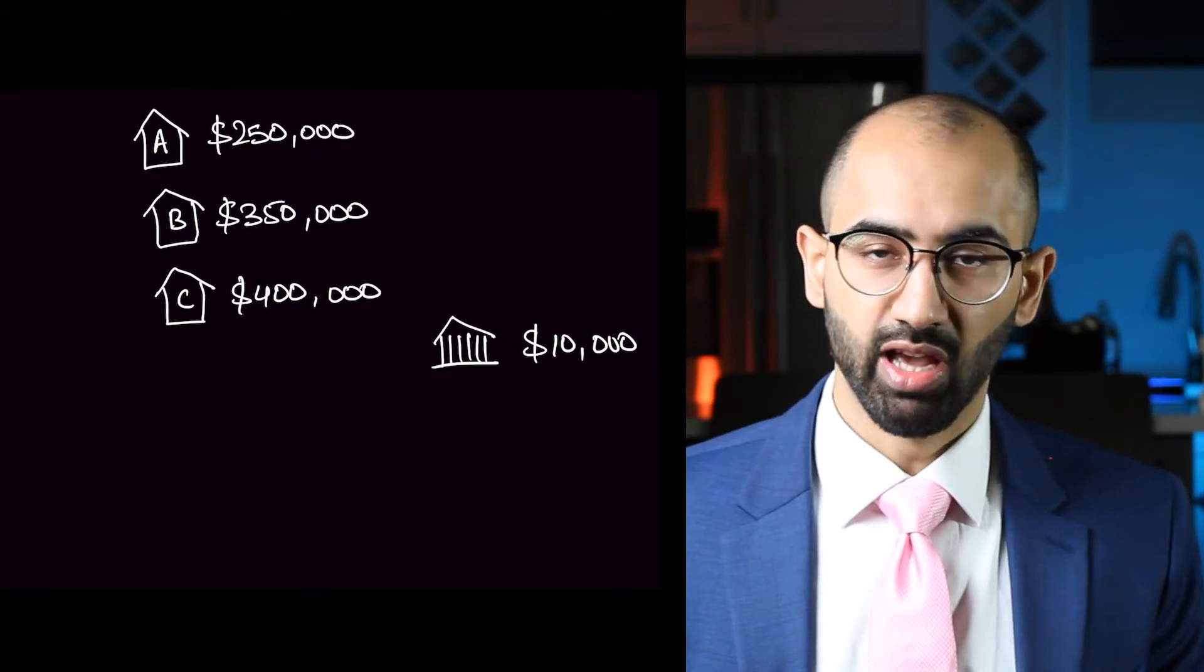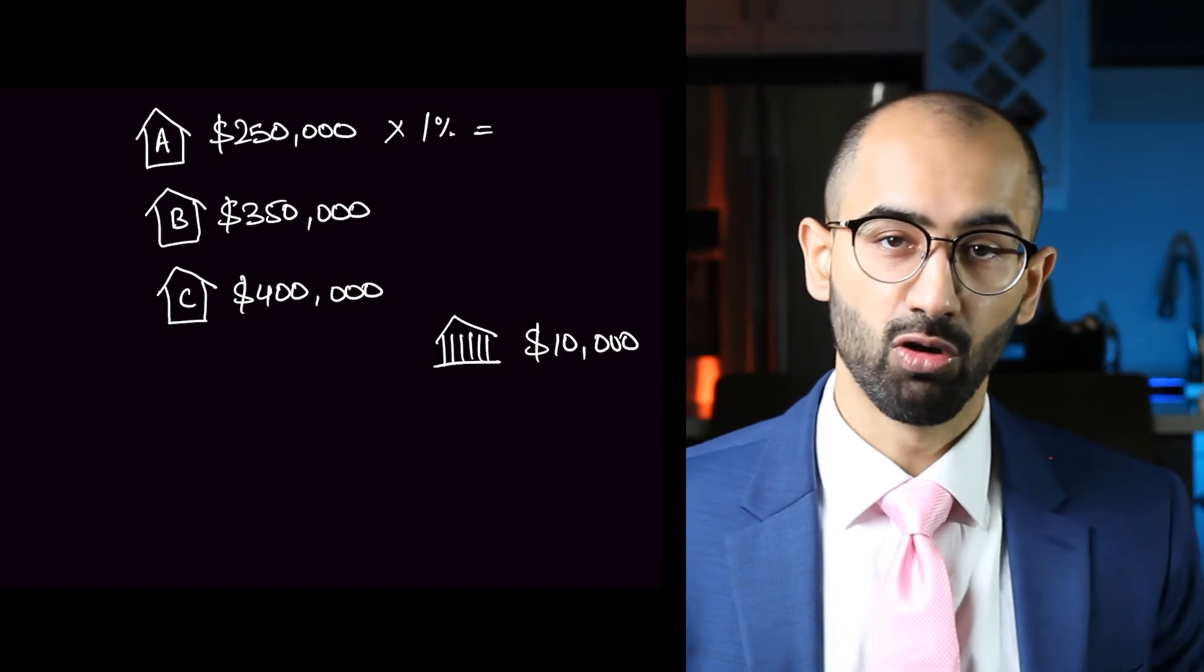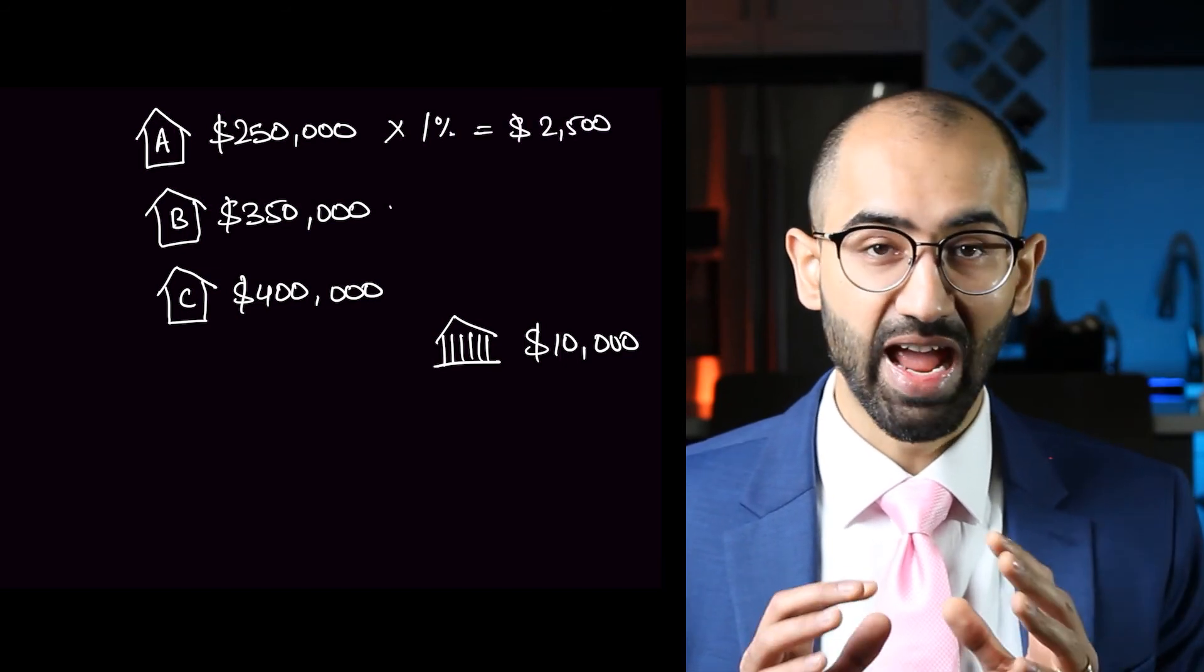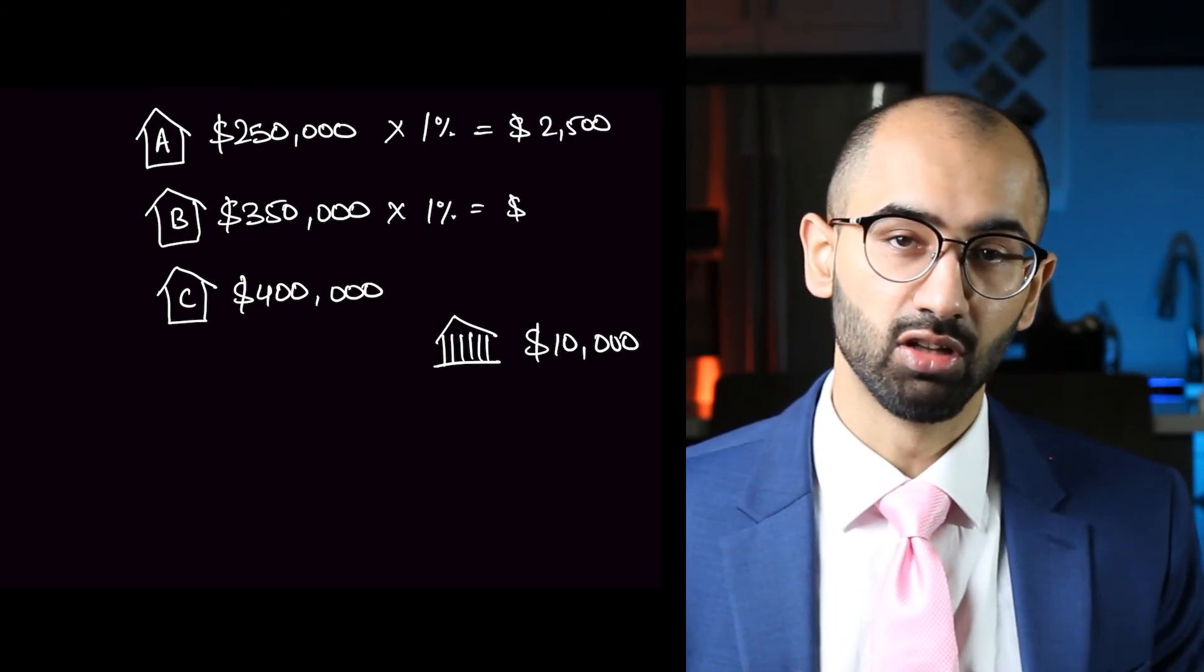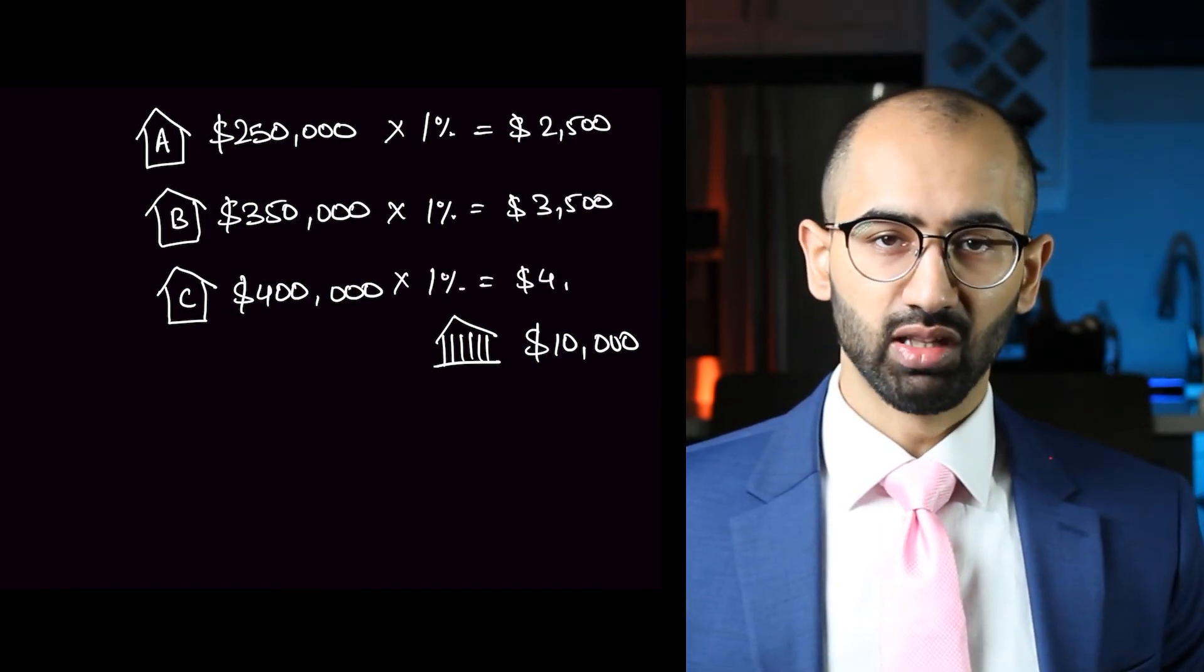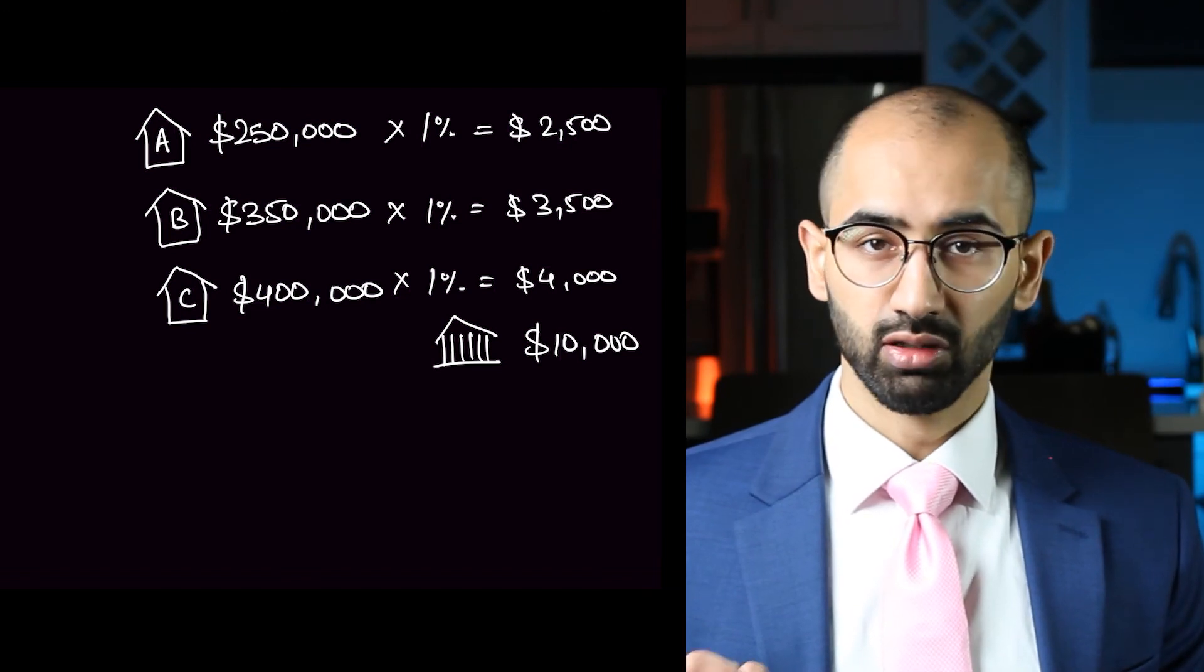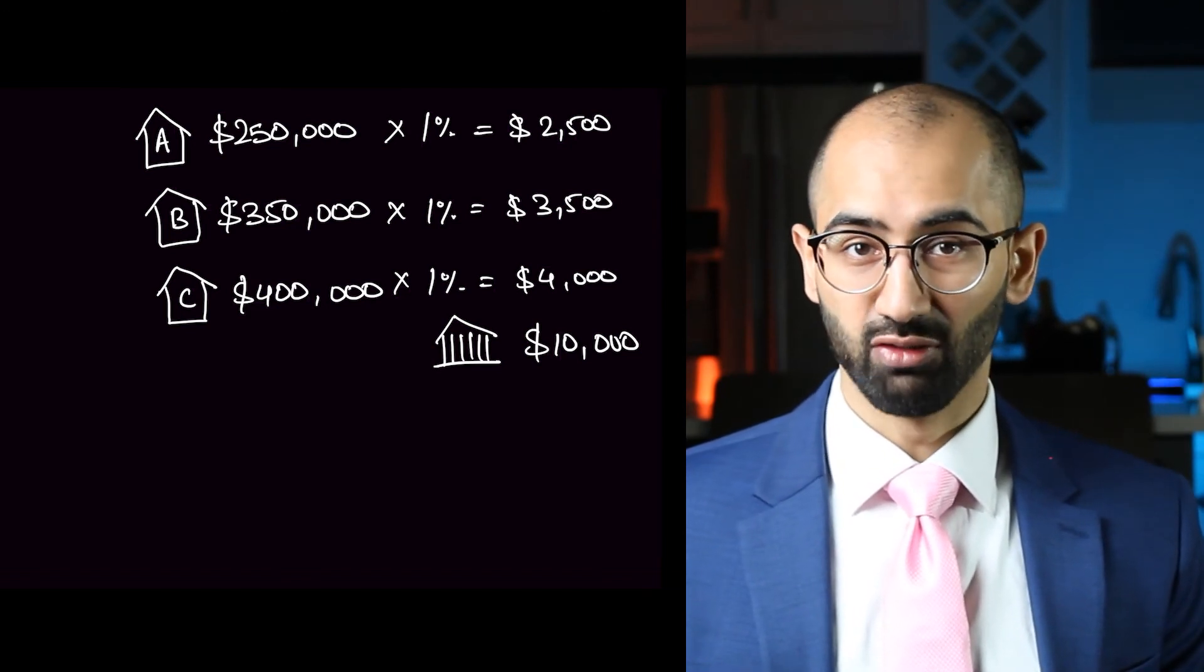The last example is when the city increases the amount of tax that they need. Let's go back to our first example where the houses were worth $250,000, $350,000, and $400,000 in the neighborhood, and the city needed $10,000 in the services that they provided. With the tax rate of 1%, the property tax that each of these houses owed was $2,500, $3,500, and $4,000.